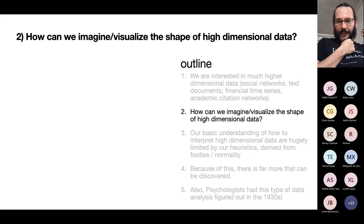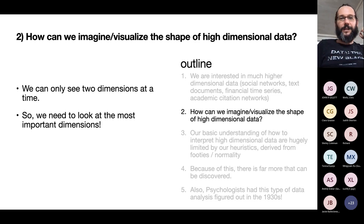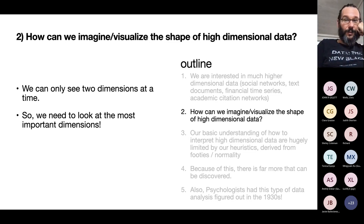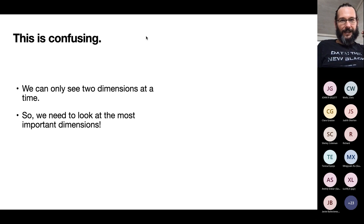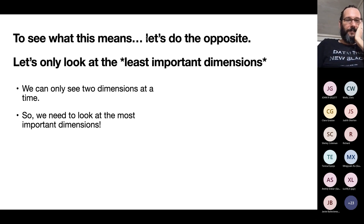The hard part of this talk is figuring out how you can visualize the shape of high-dimensional data. We can only see in two dimensions at a time — when we do data analysis on a screen or page, at every instant we have only a two-dimensional surface. So if our data is a million dimensions, we have to ignore 999,998 dimensions and only look at the two most important ones. To see what that means, let's do the opposite and look at the least important dimensions.